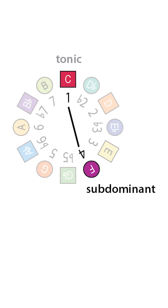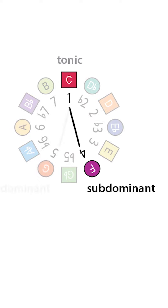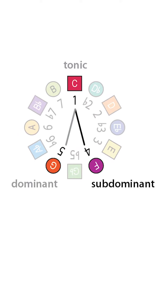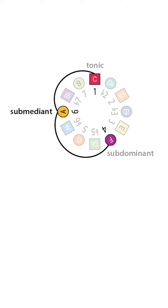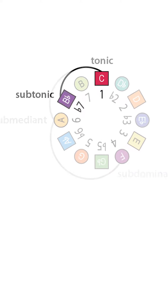The subdominant is interval four, and in Latin, sub means below, and scale degree four is the same distance below the tonic as the dominant is above the tonic, and it's also a whole step below the dominant, hence the name subdominant. The submediant, or interval six, is so-called because it's midway, or the mediant, between the tonic and the subdominant. So it's the submediant.